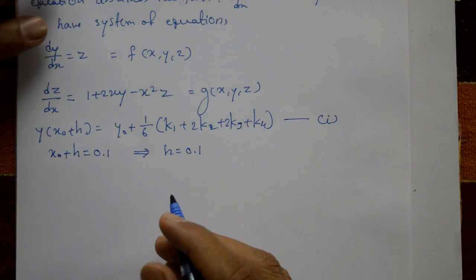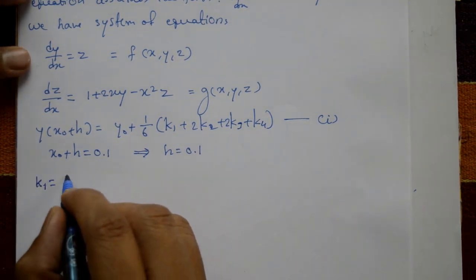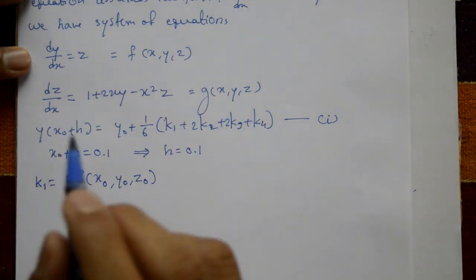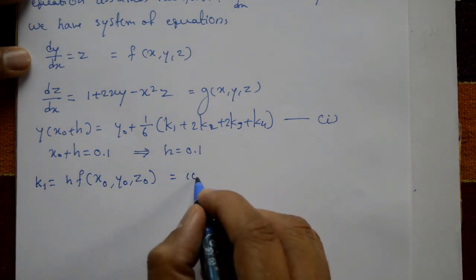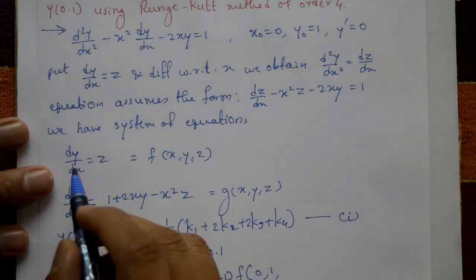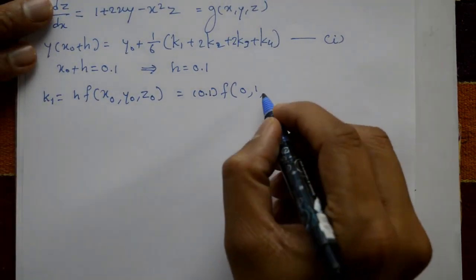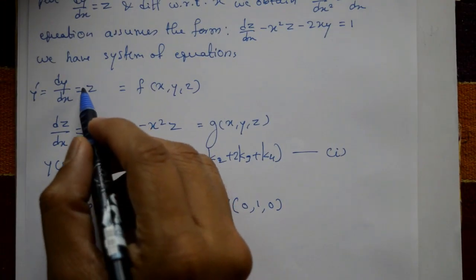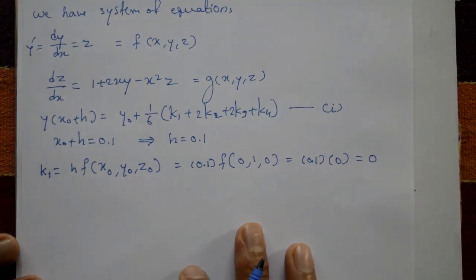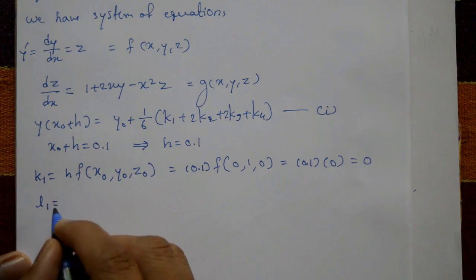Now compute k1: k1 = h · f(x₀, y₀, z₀). Since f(x, y, z) = z, k1 = 0.1 × f(0, 1, 0) = 0.1 × 0 = 0. So k1 = 0.